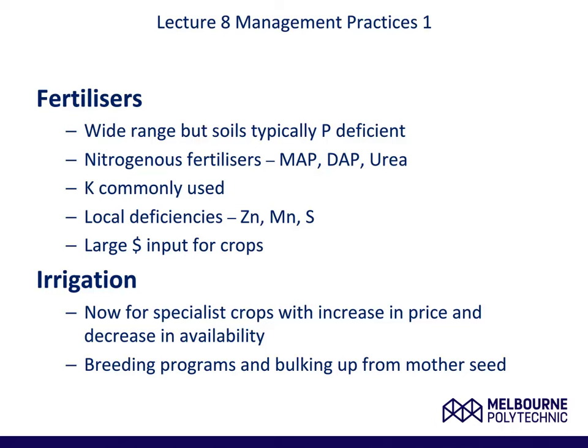Nutrients are essential for plant growth, and are usually delivered in cropping systems via fertilisers. There are a wide range of soils in Australia, but typically they tend to be phosphorus deficient. Nitrogen is also a common fertiliser added to Australian soils, and this can be found predominantly in three forms: MAP, DAP, or urea. We are conducting some experiments on urea in the Yangying Teaching and Research Demonstrator, which you have become familiar with while doing this subject. Potassium is commonly used too on Australian soils, and some of the local deficiencies we have are zinc, manganese and sulphur. These are large economic inputs for crops.